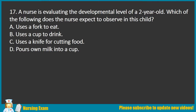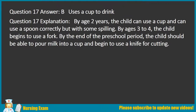Question 17. A nurse is evaluating the developmental level of a 2-year-old. Which of the following does the nurse expect to observe? A. Uses a fork to eat. B. Uses a cup to drink. C. Uses a knife for cutting food. D. Pours own milk into a cup. Answer: B. Uses a cup to drink. Explanation: By age 2, the child can use a cup and can use a spoon correctly but with some spilling. By ages 3–4, the child begins to use a fork. By the end of the preschool period, the child should be able to pour milk into a cup and begin to use a knife for cutting.